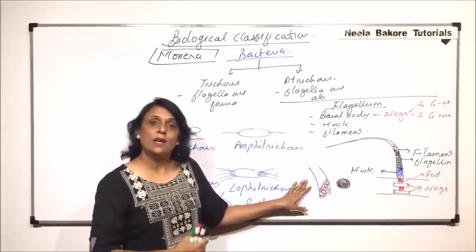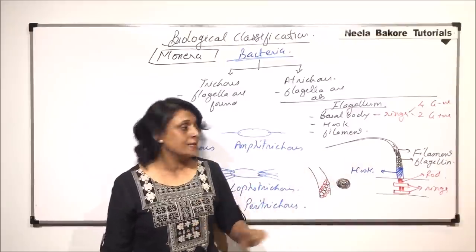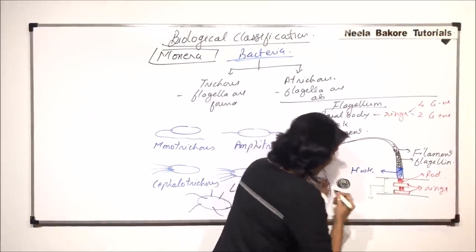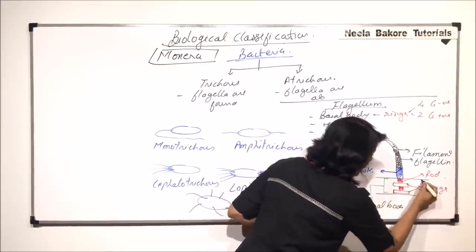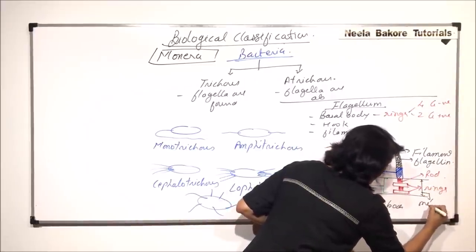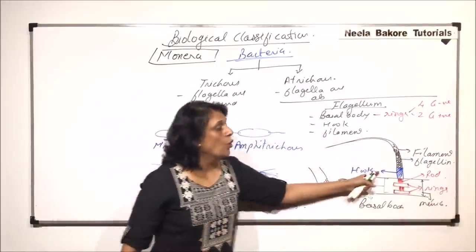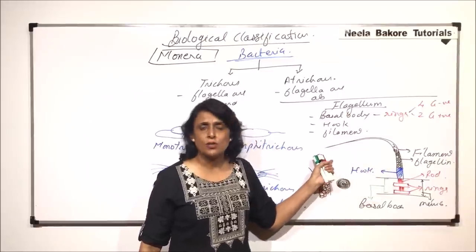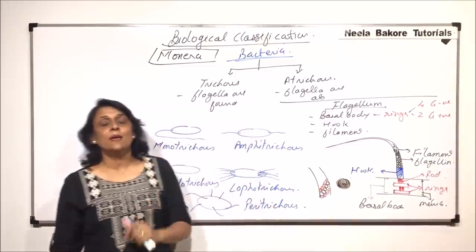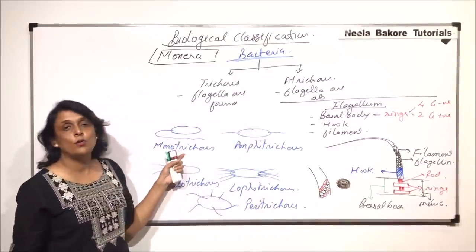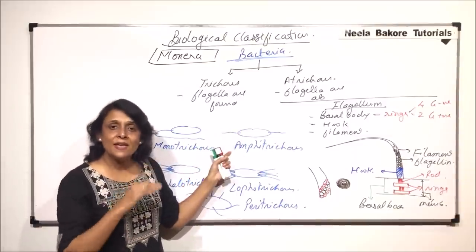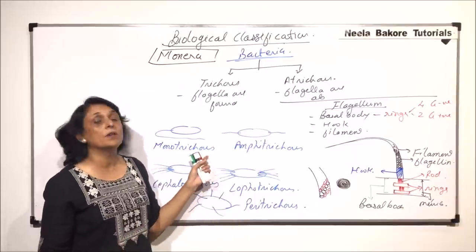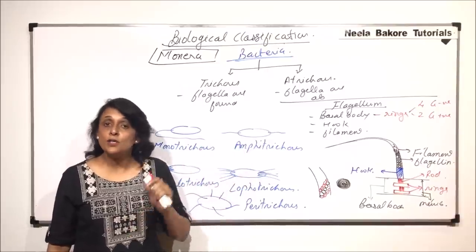It is a globular protein arranged in a chain-like structure. So the flagellum has three parts: the basal body embedded in the membrane, the hook as the connection between the basal body and the filament, and the filament itself — the visible structure outside — which is many times longer than the cell. It can be 100 times longer than the size of the cell. This is how we classify bacteria on the basis of distribution of flagella.